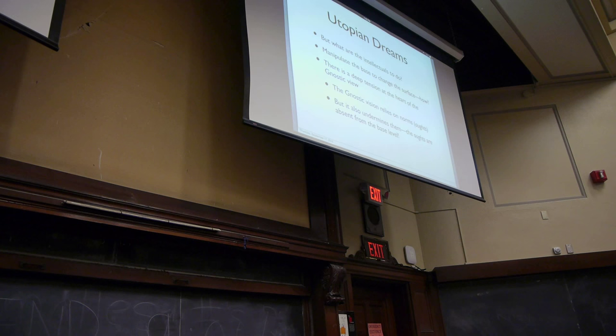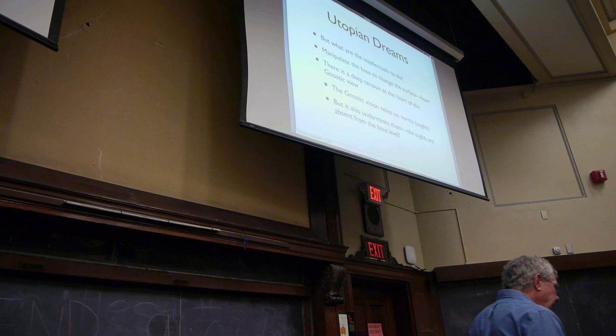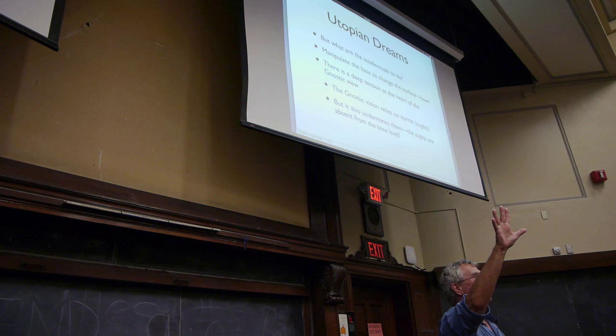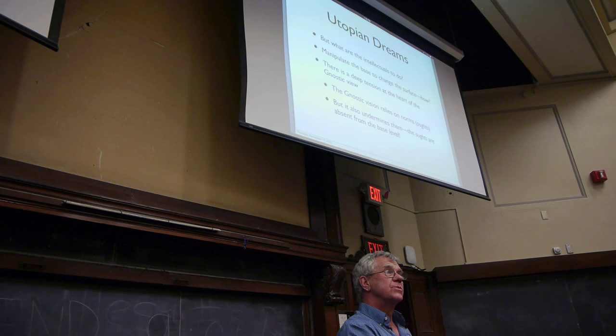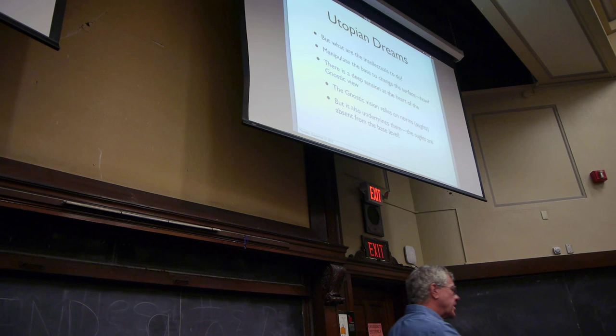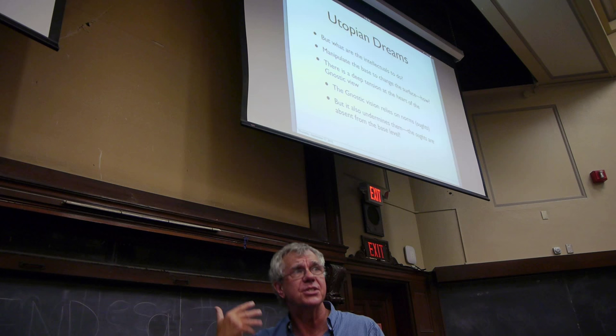And so, there is a puzzle about this. You might think this is the key to bringing about utopia, but remember that the manifest image is where all the oughts are. That's where the shoulds are. That's where the ideas of right and wrong, just and unjust, virtue and vice are. Get rid of that, and look at the base level, and what do you find? Just the is, right? There just are these social forces. There are these molecular motions. There are these institutional structures. There are these psychological structures. However you end up cashing this out, you just have the is. You don't have the ought, at the base level.